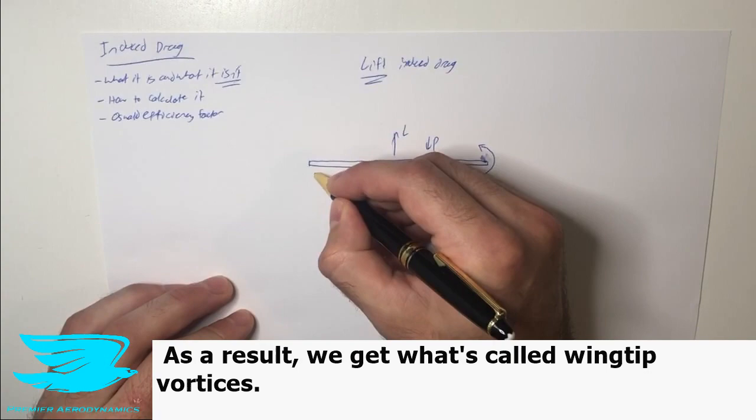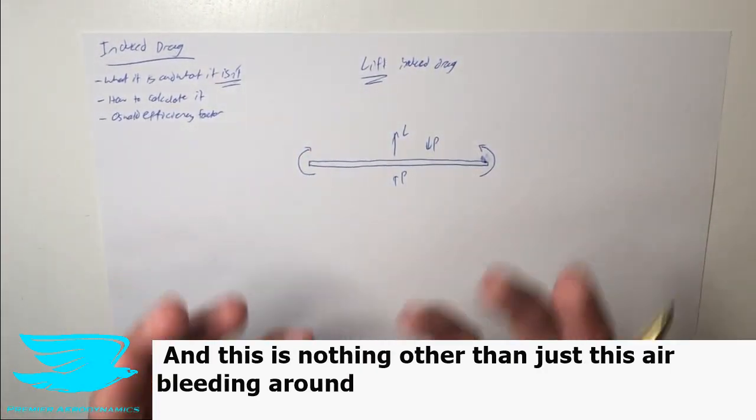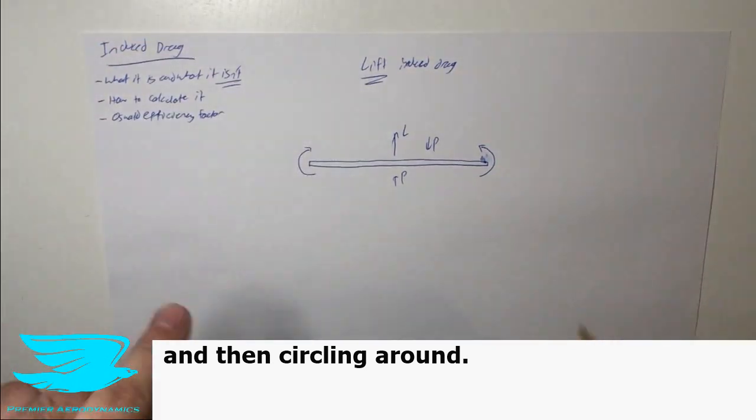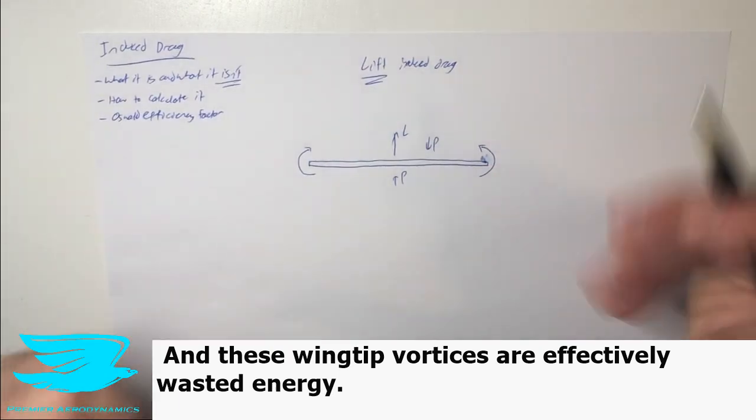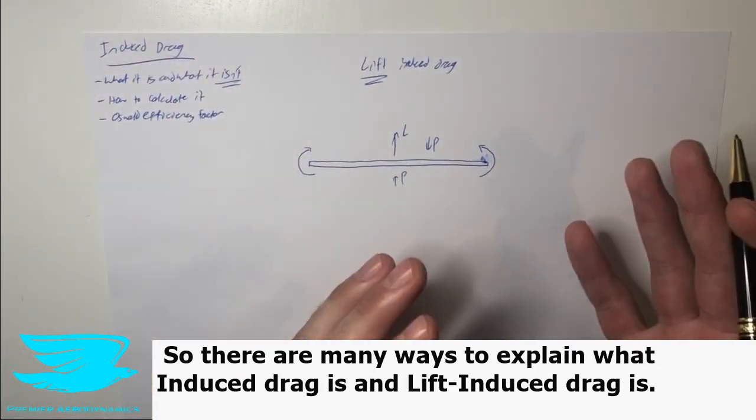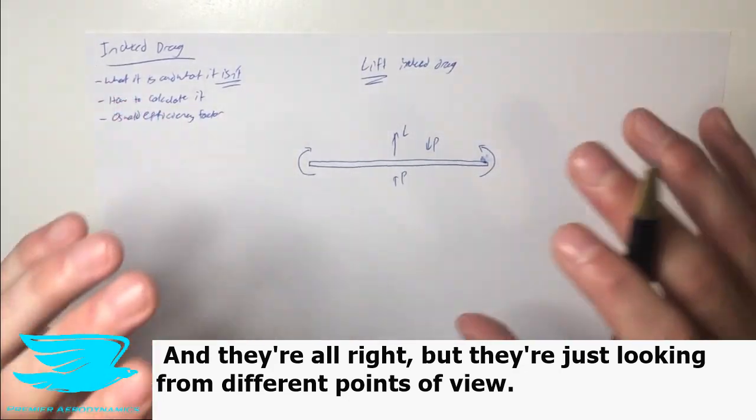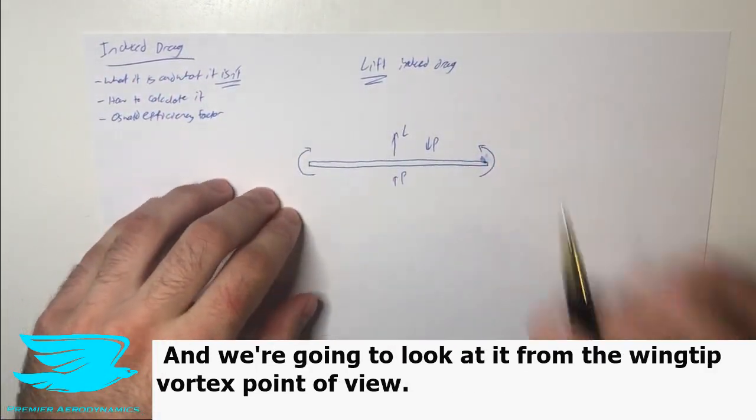As a result, we get what's called winged vortices. And this is nothing other than just this air bleeding around and then circling around. And these vortices are effectively wasted energy. So there are many ways to explain what induced drag is, and lift induced drag is. And they're all right, but they're just looking from different points of view. And we're gonna look at it from the winged vortex point of view.